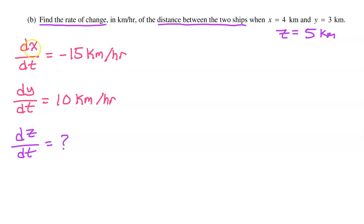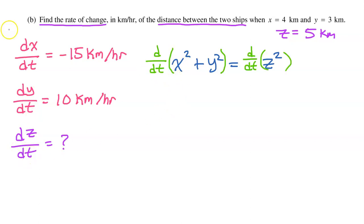We need a relationship connecting the variables, and that relationship is the Pythagorean theorem: X squared plus Y squared equals Z squared. Let's differentiate both sides so we can make dX/dt, dY/dt, and dZ/dt appear. The derivative of X squared — we take the derivative of the outer function, which is 2X, but because these variables do not match, we have to use the chain rule and multiply by the derivative of the inner function, which is dX/dt.